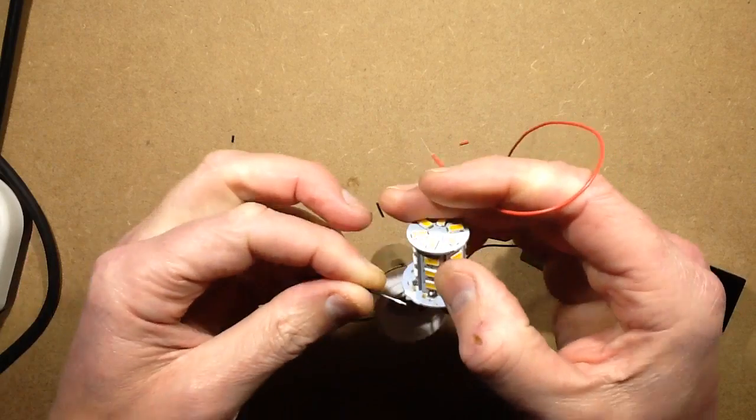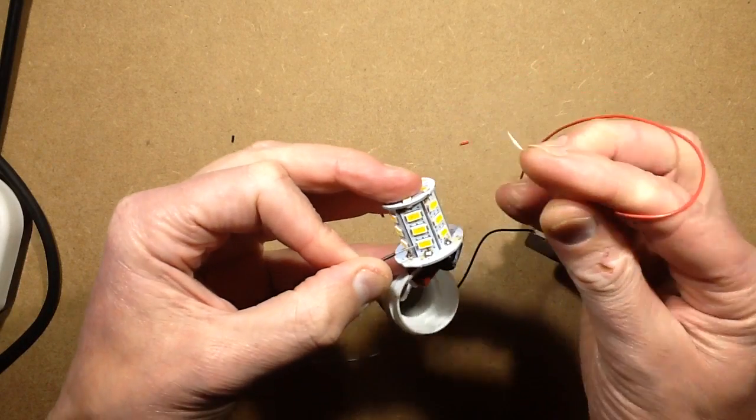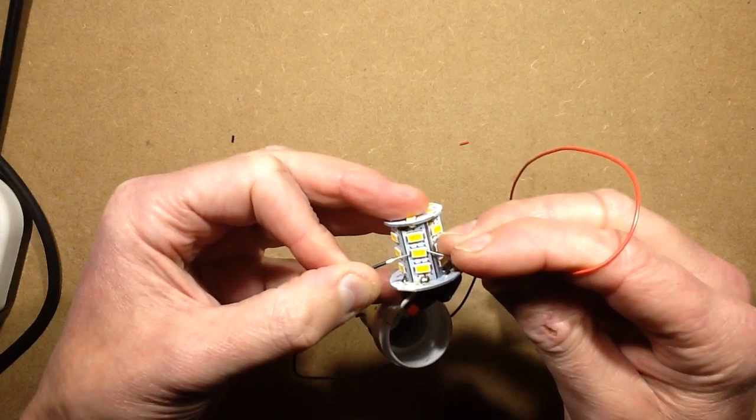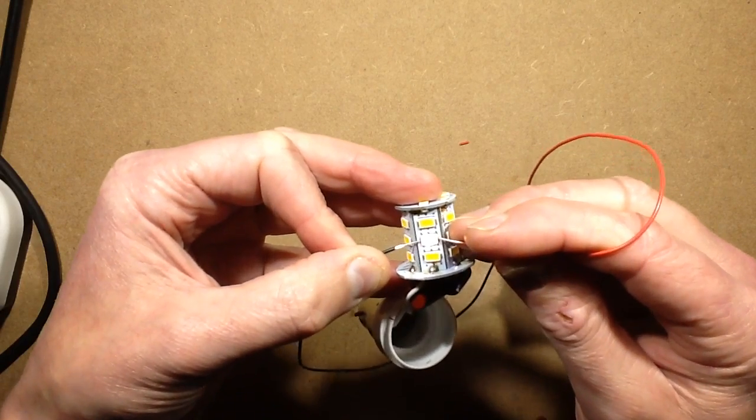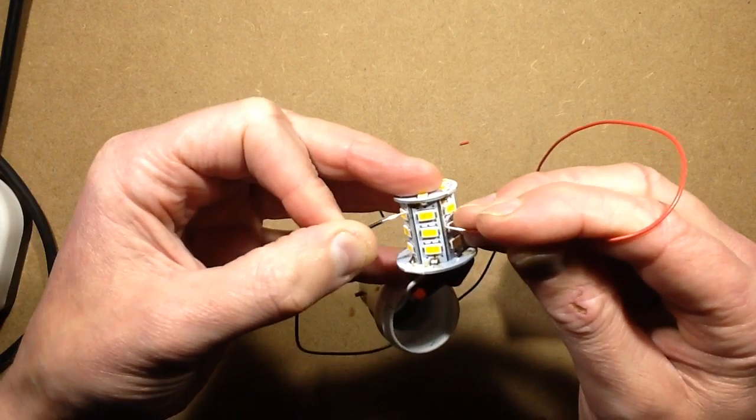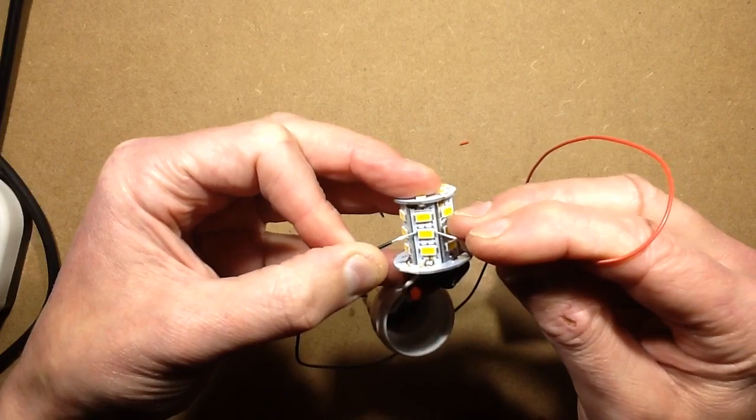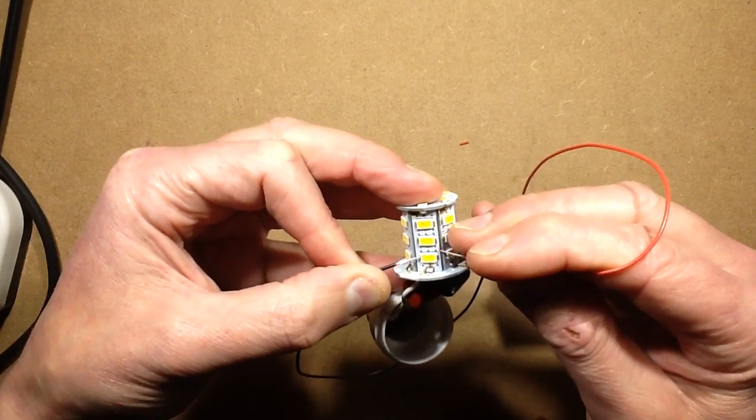This one's lighting brightly. Incidentally, the source of the light from these ones is very close to where that black dot is. And that one is not lighting. So that black dot is a defective LED.